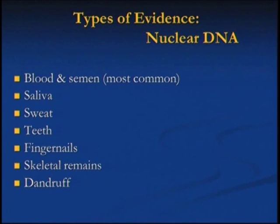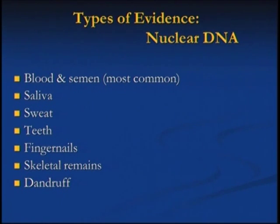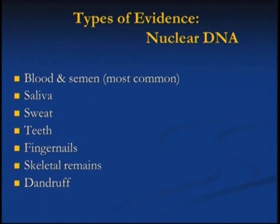Any cell that has a nucleus — and that's most of your cells; red blood cells don't have nuclei, but white cells in the serum do. Blood and semen are the most common sources. But you can also use saliva, even from a bite mark, off stamps, sweat, ski masks, sweatbands on baseball caps, teeth, fingernails, skeletal remains, and dandruff. You're shedding your DNA all the time because you're shedding skin cells.